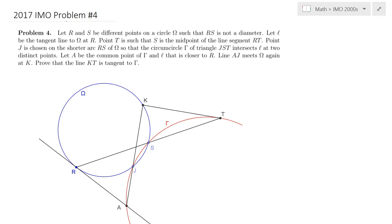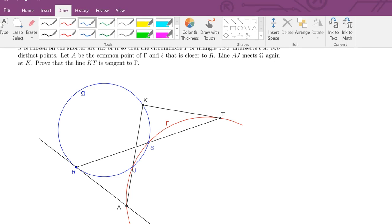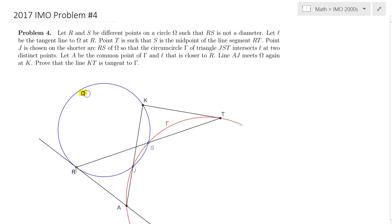Hello everybody, in this lecture I will be solving 2017 IMO problem number 4. Here is a view of this problem and a simple sketch as well. We are given two points R and S on circle Omega.